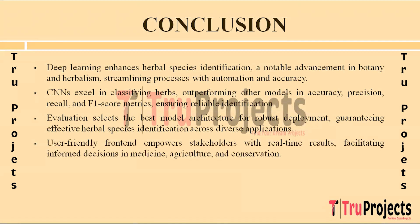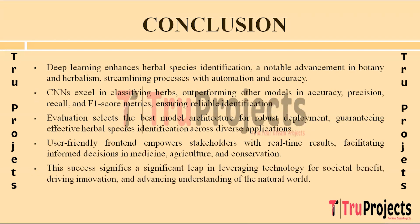By providing an intuitive front-end interface and real-time classification results, the project empowers users including herbalists, botanists, farmers, and consumers to make informed decisions and contribute to areas such as medicine, agriculture, and conservation. Overall, the project's success in revolutionizing herbal species identification through deep learning signifies a significant step forward in leveraging technology for the benefit of society, fostering innovation and advancing our understanding of the natural world.